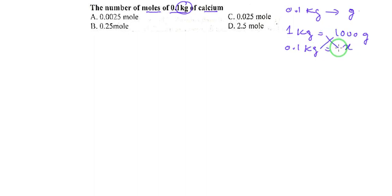So you cross multiply. x is equal to 0.1 multiplied by 1000. So here x will be 100 grams. So here you have mass produced, then you need to find out the number of moles.